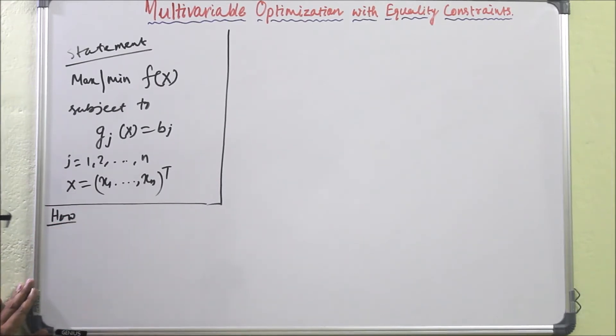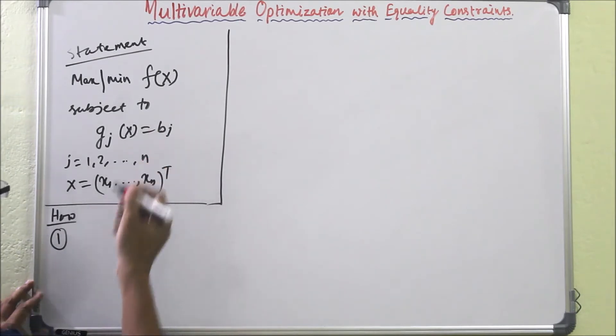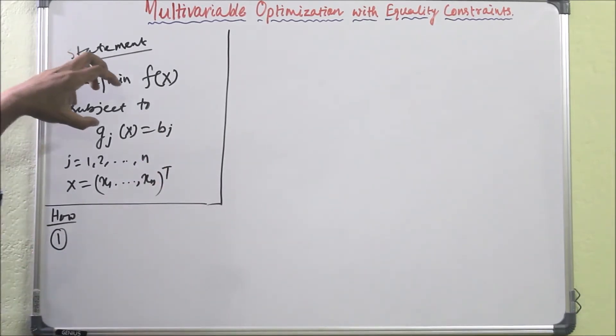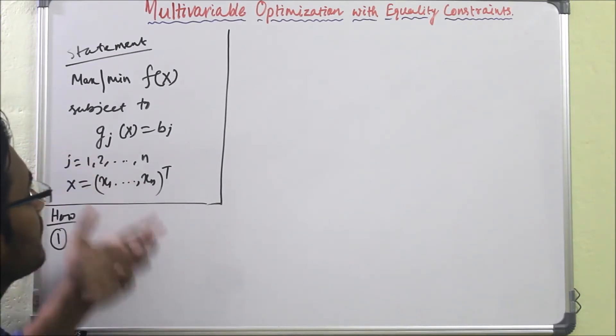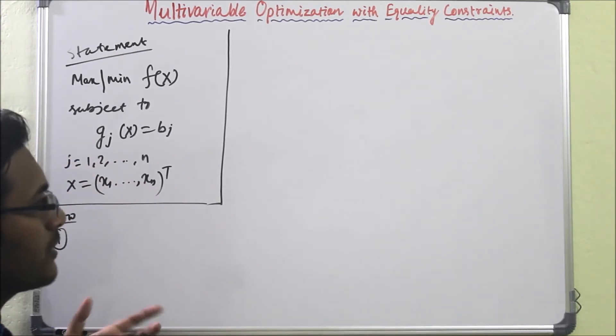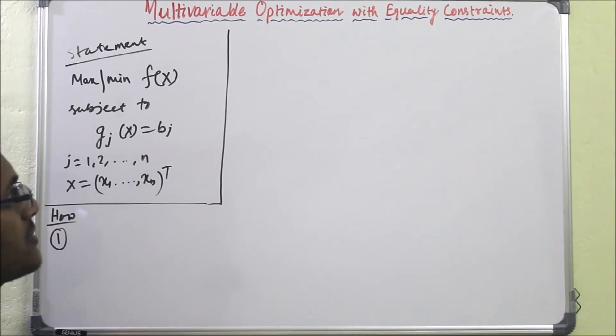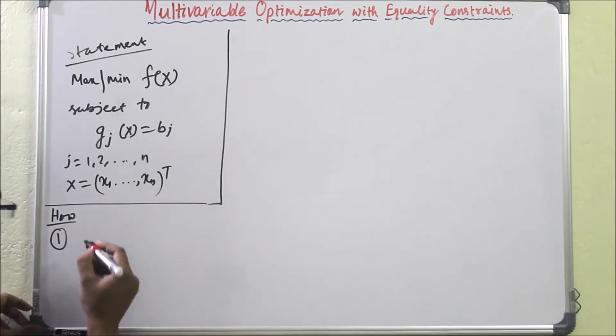One basic strategy is to convert this problem to our previous knowledge. In our previous work, we handled optimization without constraints. So we have to convert this equality constraints problem to a no constraints problem.